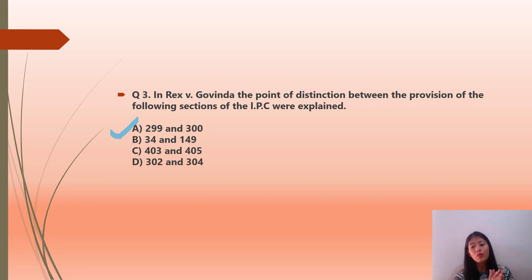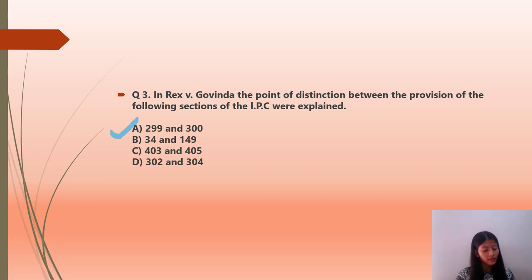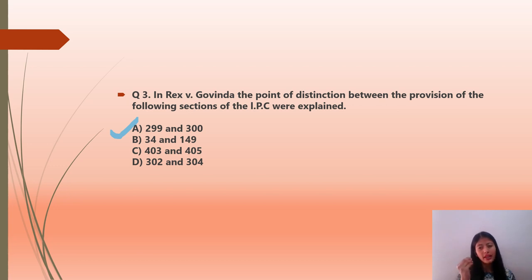R versus Govinda is a very important case. It is said that culpable homicide is the genus and murder is its species. It is also said that all murders are culpable homicide, but not all culpable homicides are murder. When you study Sections 299 and 300 of IPC, you must refer to this case.